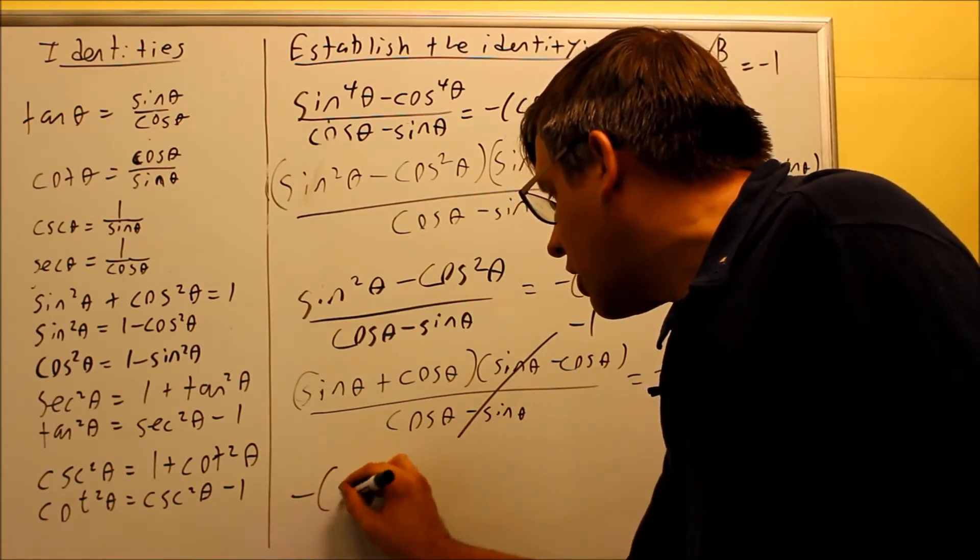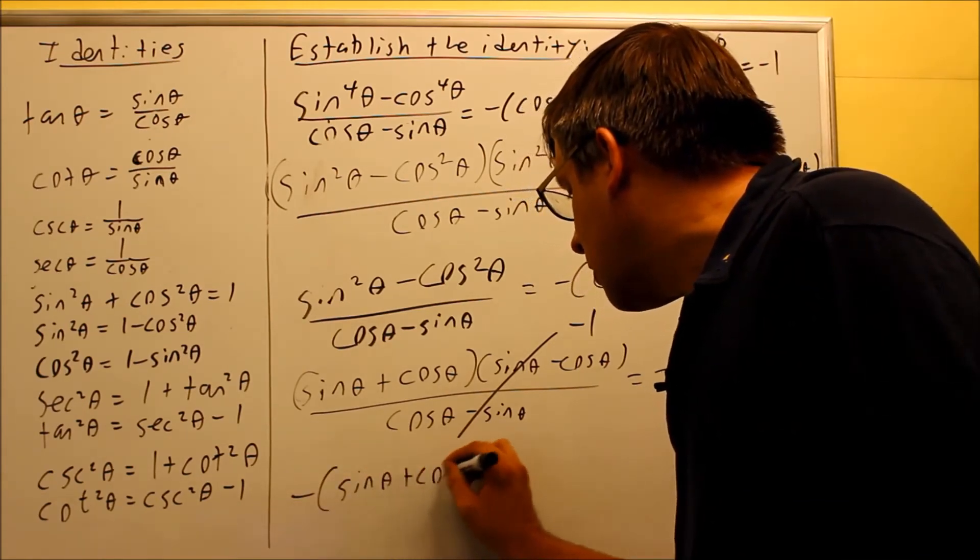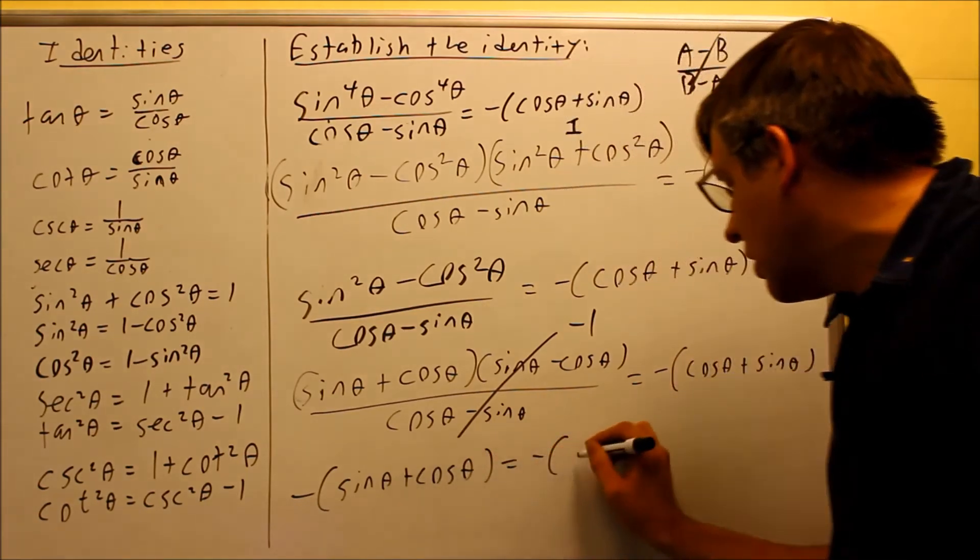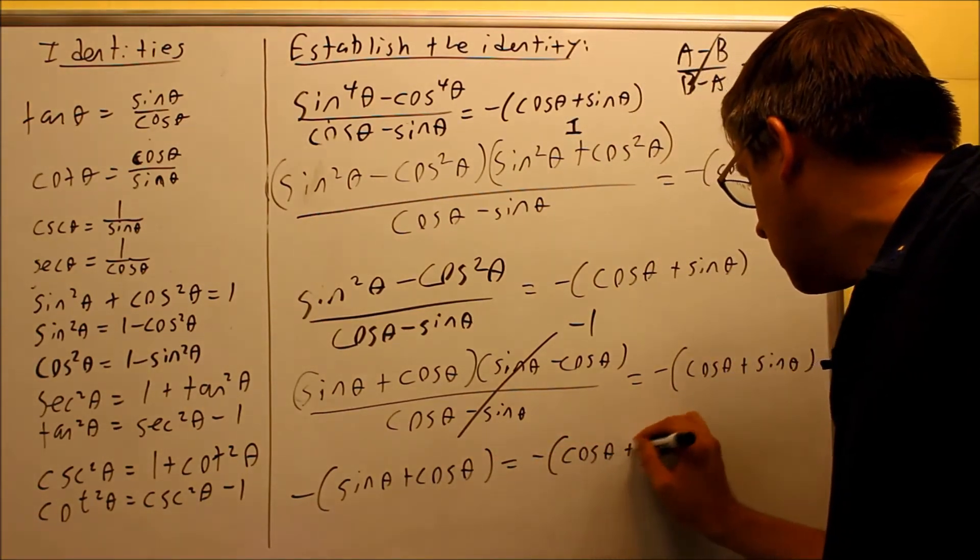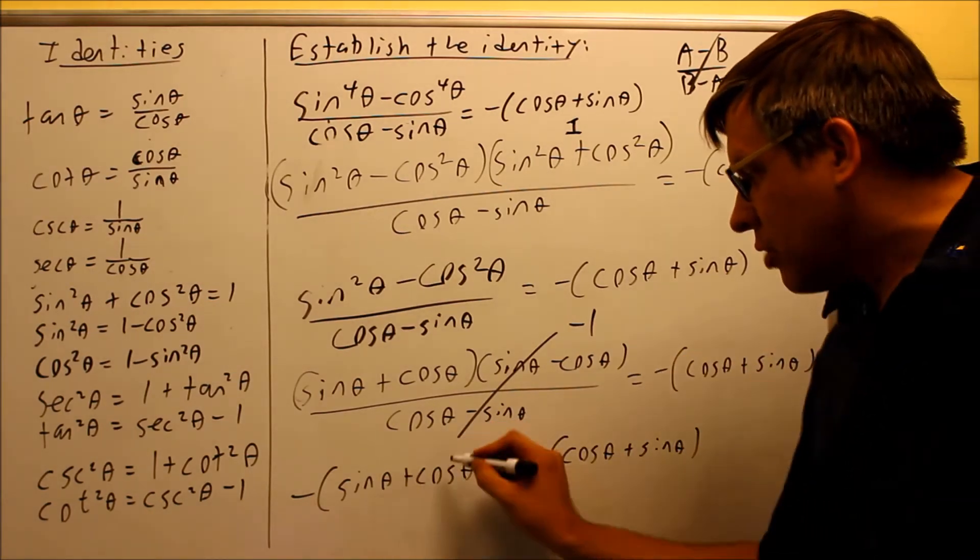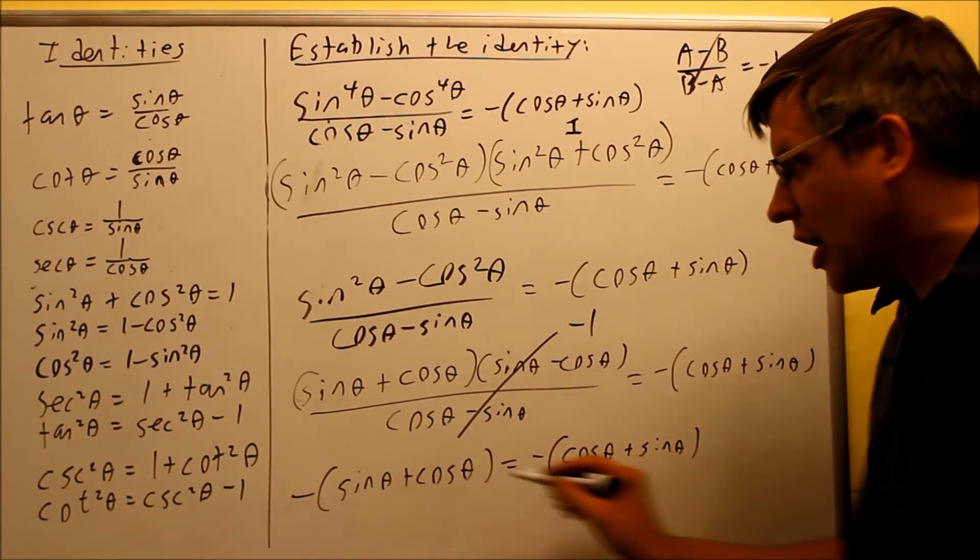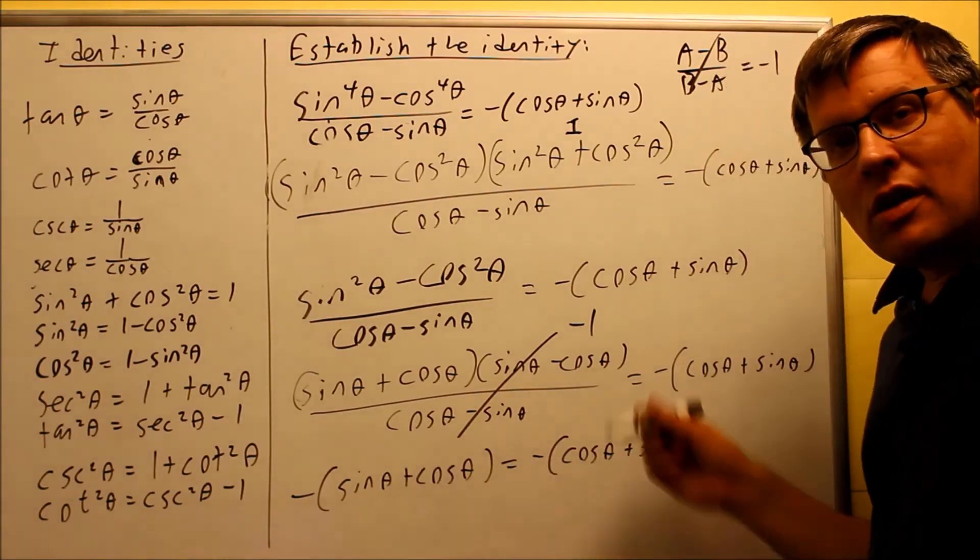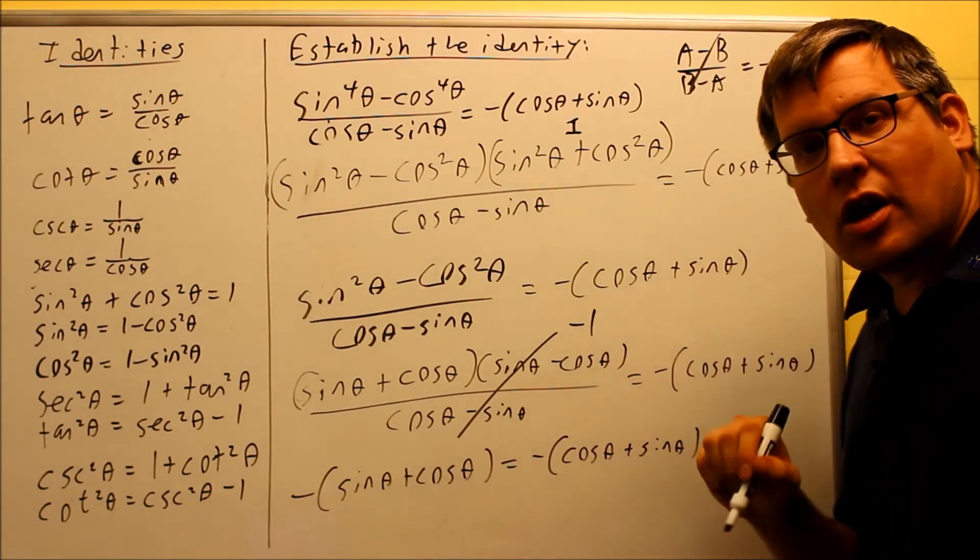So therefore, now I have a negative out front here, and I have sine theta plus cosine theta. And on this side, I've got this one. So now both sides are equal because sine plus cosine is the same as cosine plus sine. They both have the negative sign in front. So therefore, I've shown now that one side equals the other.